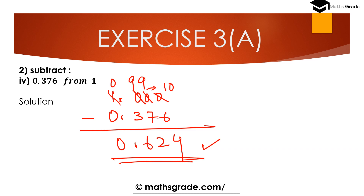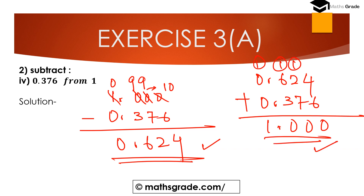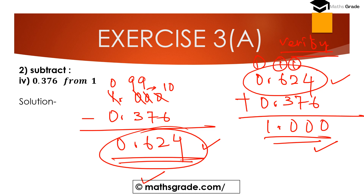To verify, add 0.624 with 0.376. 4 plus 6 is 10, carry 1. 1 plus 2 is 3, 3 plus 7 is 10, carry 1. 1 plus 6 is 7, 7 plus 3 is 10, carry 1. 1 plus 0 is 1. Result is 1.000. So this is correct. Subtracting 0.376 from 1 is 0.624.